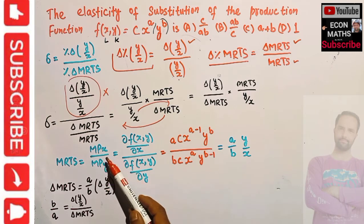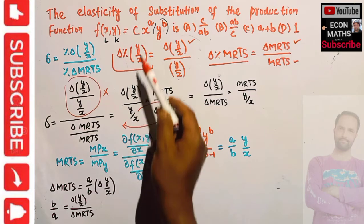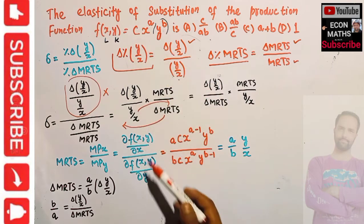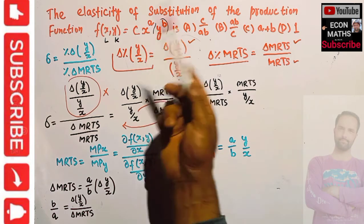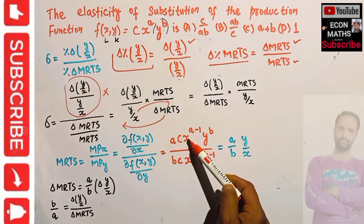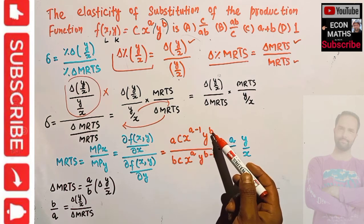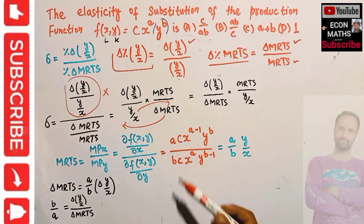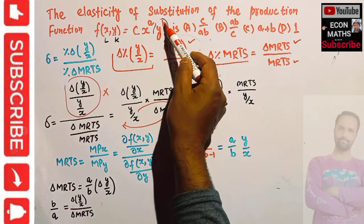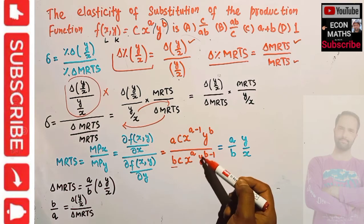Marginal product of X is the partial derivative of the production function with respect to X. Since we take the derivative with respect to X, the exponent 'a' becomes the coefficient, giving a·c·x^(a-1)·y^b. For marginal product of Y, the partial derivative with respect to Y gives b·c·x^a·y^(b-1). The c's cancel, leaving MRTS = (a/b)·(y/x).